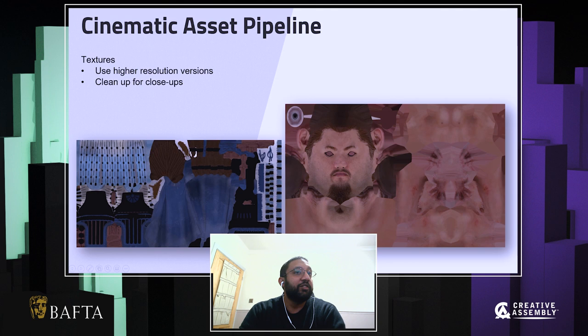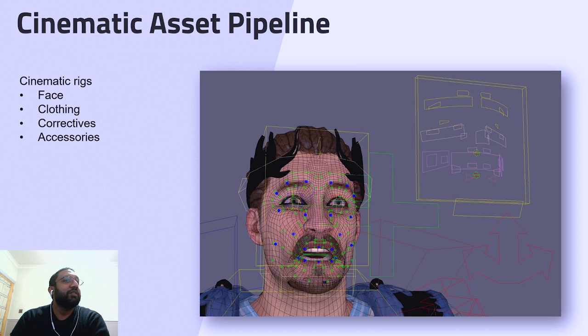On the texture side, we do cleanups as well if required. Depending on what's needed for the camera, there are times we need to re-bake some textures, or clean up some of the bakes that we see, or add extra detail if required. Part of the asset pipeline is also building the cinematic rigs, and here we usually split that up into the face, the cloth, correctives if required, and the accessories — which contain the weapons and so on.